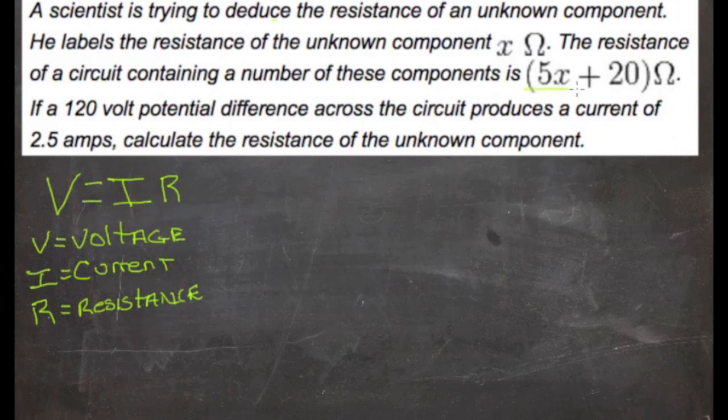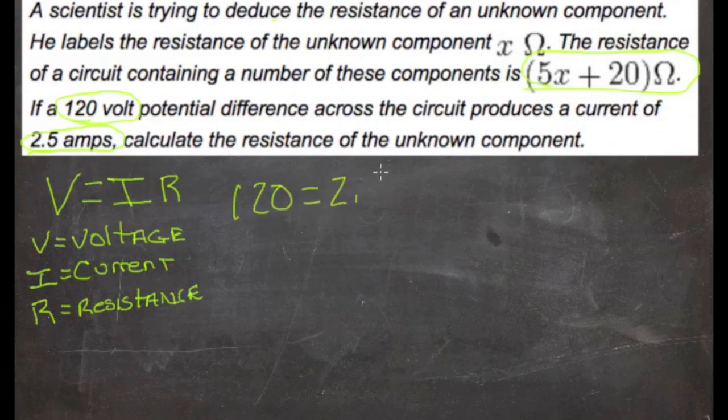So our resistance is this 5x plus 20 ohms, so we put it in place of R. Our voltage is 120 and our amperage is 2.5 amps. So we're just going to plug those values in: 120 volts equals 2.5 amps times 5x plus 20 ohms.